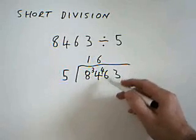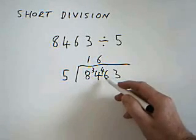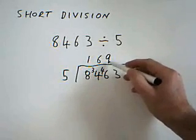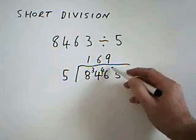Read this as 46 now. 5 into 46. It's 9 times which is 45. Put the 9 there.